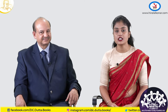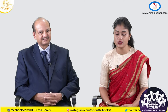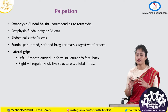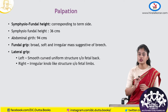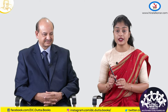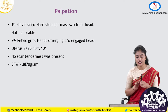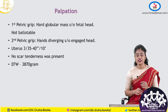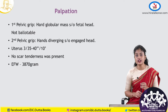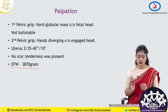On palpation, symphysiofundal height was corresponding to term gestation, measuring around 36 centimeters. Abdominal girth was 94 centimeters. Fundal grip was broad, soft, irregular mass suggestive of breech. Left lateral grip was smooth, uniform, curved resistance suggestive of fetal back; right side showed irregular knob-like structures suggestive of fetal limbs. First pelvic grip was a hard globular mass suggestive of fetal head, not ballotable because of engagement. Second pelvic grip: hands were diverging because the head is engaged. Uterus had 3 contractions lasting 35-40 seconds every 10 minutes. Scar was non-tender. By Johnson's formula, estimated fetal weight came to 3870 grams.